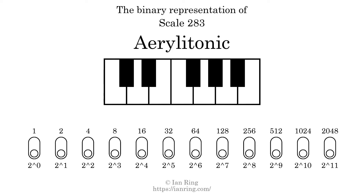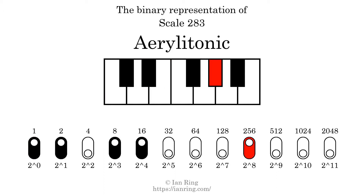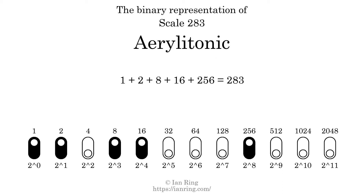The binary representation of this scale is determined by mapping tones of the scale to binary digits. Each binary digit represents a power of 2. To get the scale number, we add the powers of 2 together. The powers of 2 that are present in the scale, all added together, equals 283. That is why the scale number, in decimal, is 283.